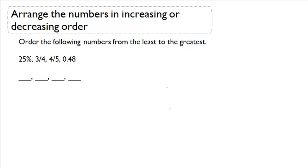Order the following numbers from least to greatest: 25%, 3 over 4, 4 over 5, and 0.48.